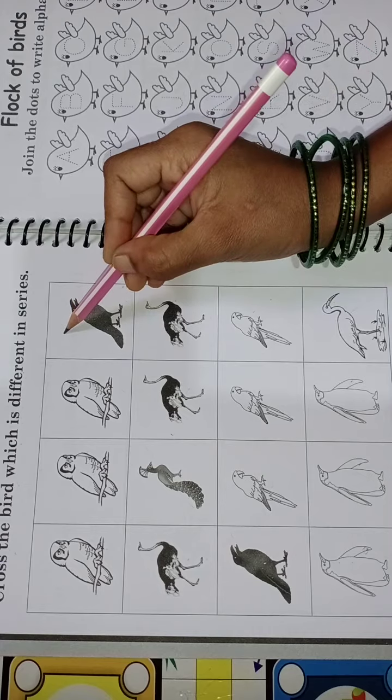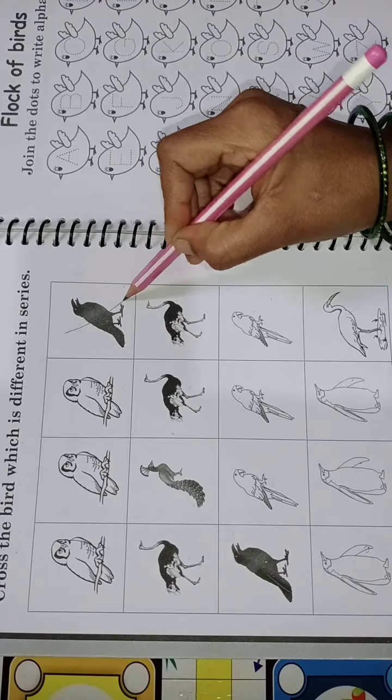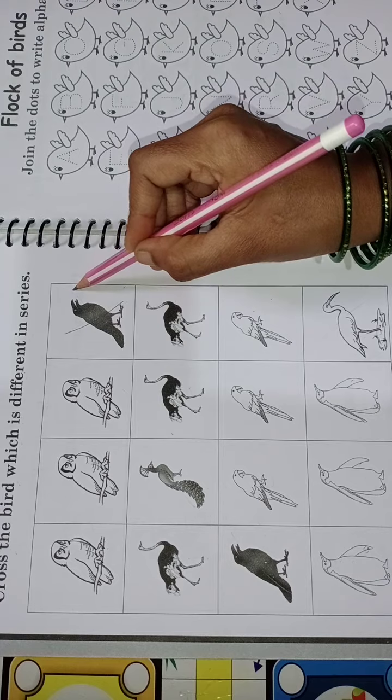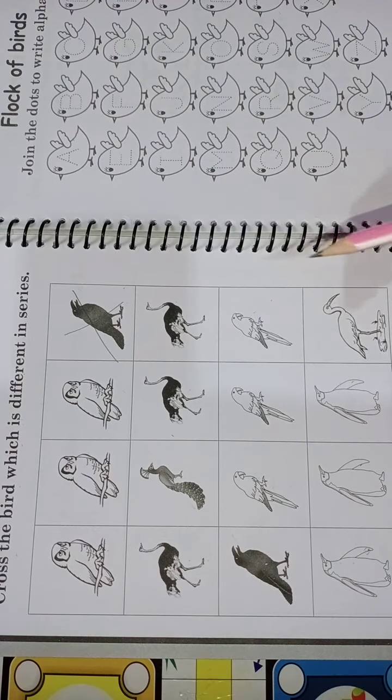Now cross it. Make a slant line and make another slant line from the opposite side.